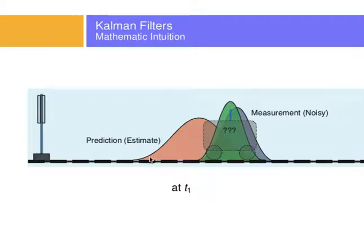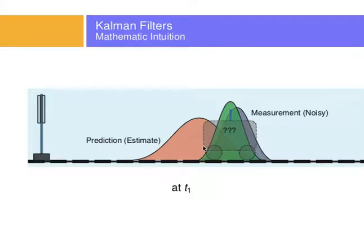In terms of state, one object might measure the state with a certain probability distribution via one sensor, and then another sensor might give me a different probability distribution. Can I come up with another probability distribution that is somewhat in between and more accurate as to what the state of the object is that I'm trying to determine? That's the idea behind Kalman filters.